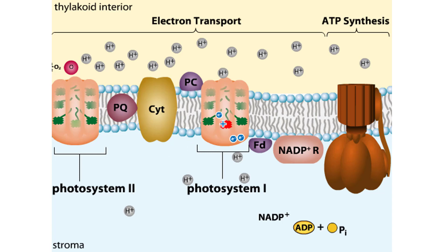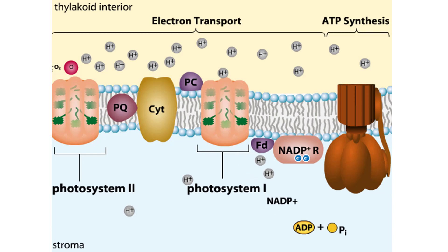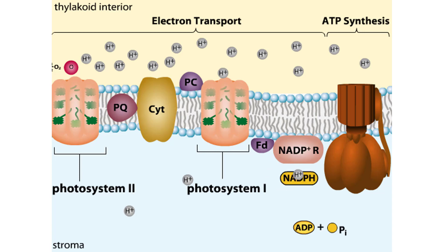Excited electrons from photosystem I are used to reduce ferredoxin. NADP reductase then uses two electrons from ferredoxin and two protons from the stroma to reduce NADP+, producing NADPH. NADPH is later used to fuel the energy-consuming sugar production stage of photosynthesis.